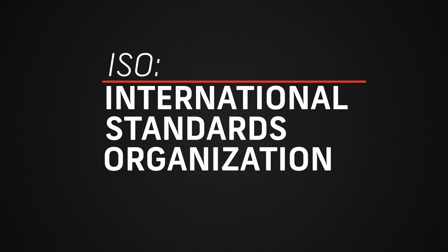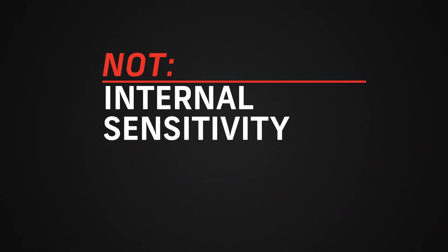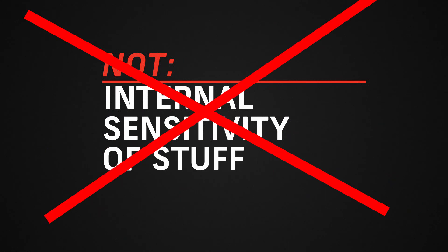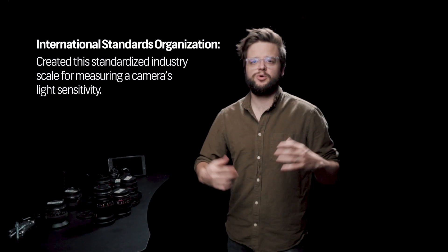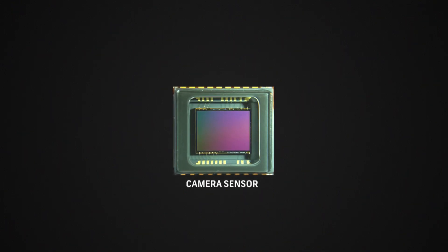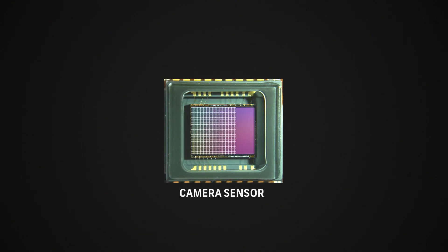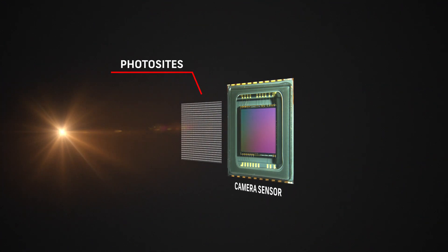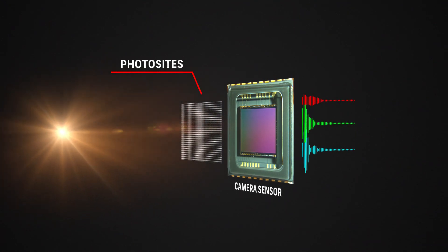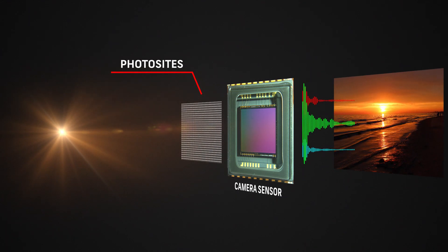Now what is ISO? ISO stands for the International Standards Organization, which is interesting because I always thought it was something like 'internal sensitivity of stuff.' But the International Standards Organization are just the folks who came up with this system. When a digital camera sensor, which has millions and millions of little receptacles that gather light, receives light, it creates an electric signal. That electric signal is then interpreted into your image.